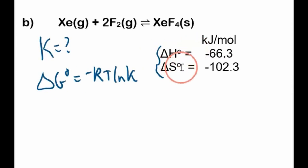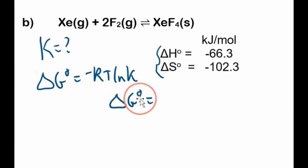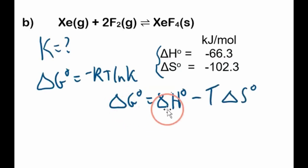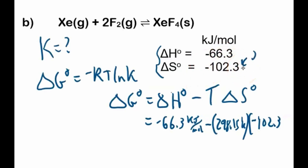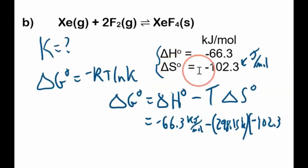To do that, given enthalpy and entropy data, we use the Gibbs free energy equation under standard conditions: ΔG° = ΔH° − TΔS°. We plug in: ΔH° = −66.3 kJ/mol, T = 298.15 K, and ΔS° = −102.3 J/(mol·K). Note: entropy is almost always reported in joules per mole because the numbers are much smaller than enthalpy.